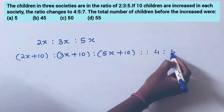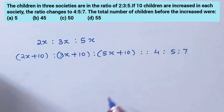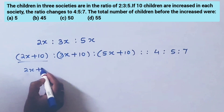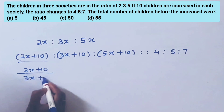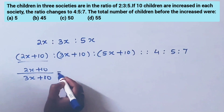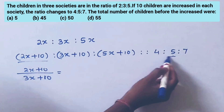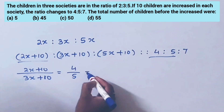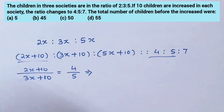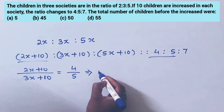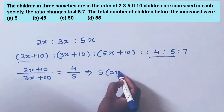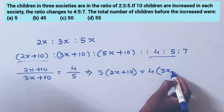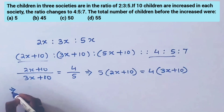Using the new ratio 4:5:7, we equate: 5 into (2x+10) is equal to 4 into (3x+10).